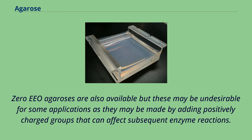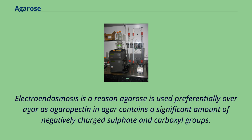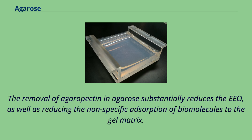Zero EEO agaroses are also available, but these may be undesirable for some applications as they may be made by adding positively charged groups that can affect subsequent enzyme reactions. Electroendosmosis is a reason agarose is used preferentially over agar, as agaropectin in agar contains a significant amount of negatively charged sulfate and carboxyl groups. The removal of agaropectin in agarose substantially reduces the EEO, as well as reducing the nonspecific adsorption of biomolecules to the gel matrix.